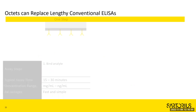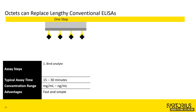A one-step assay can be very fast - typically you can do a full 96-well plate in about half an hour. But that's not always the right sensitivity for every experiment. It might not generate enough signal for very low concentrations. It works well for low milligram to high milligram per milliliter ranges.